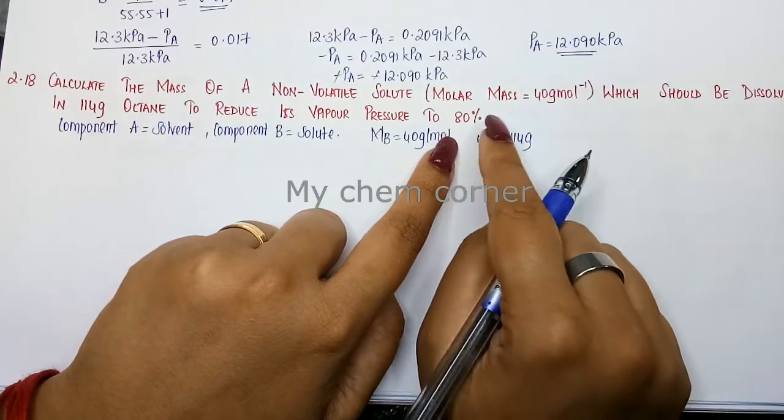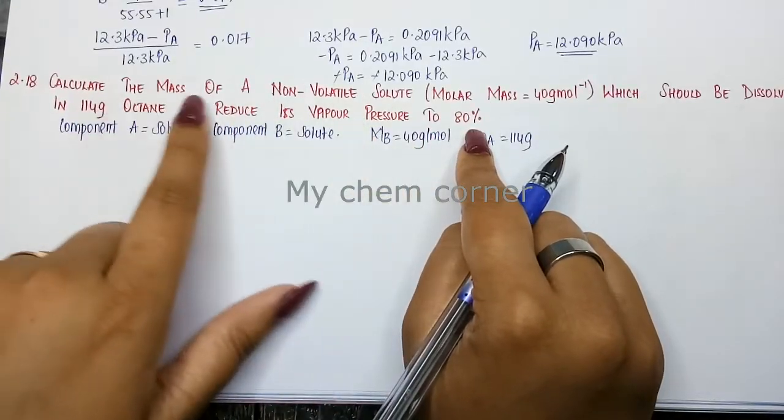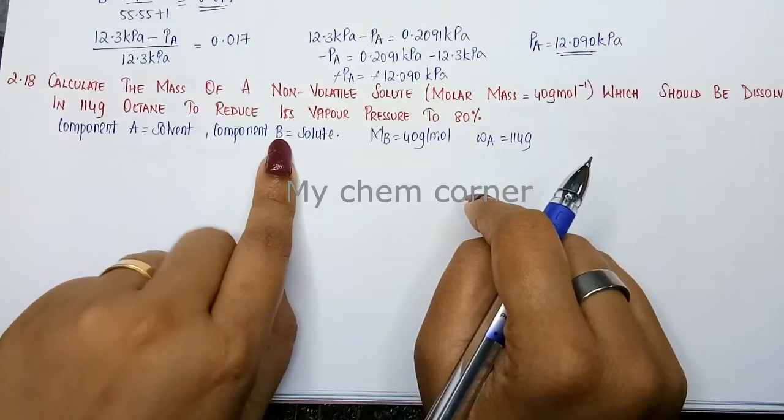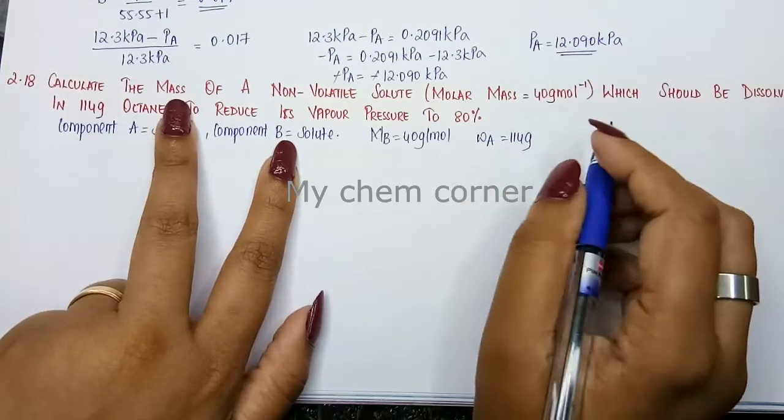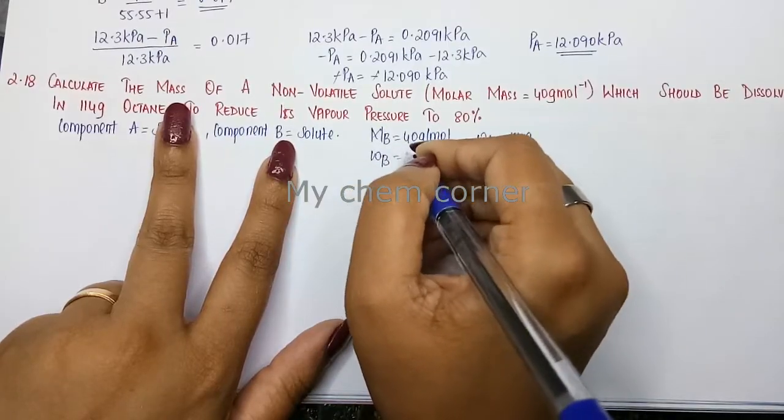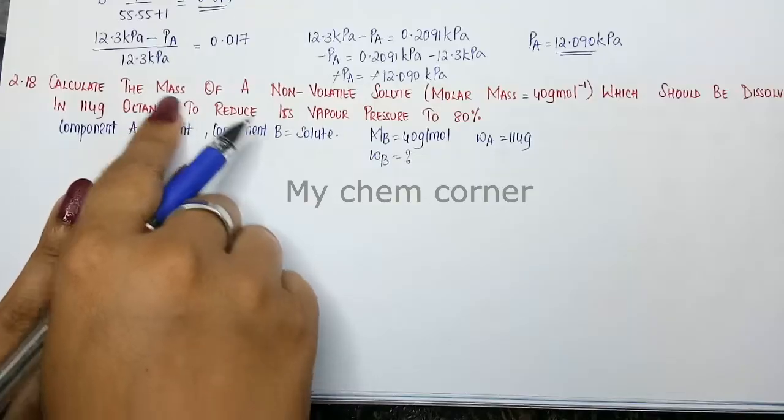We need to calculate the mass of the non-volatile solute. Solute is denoted as B, so we need to calculate WB. MB can be easily found because you know what octane is and can calculate its molar mass.